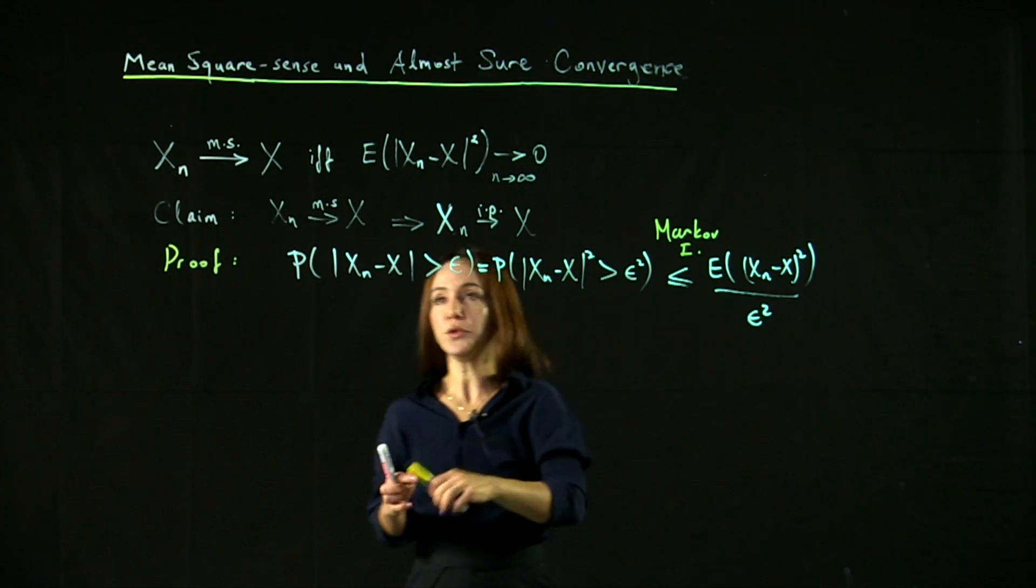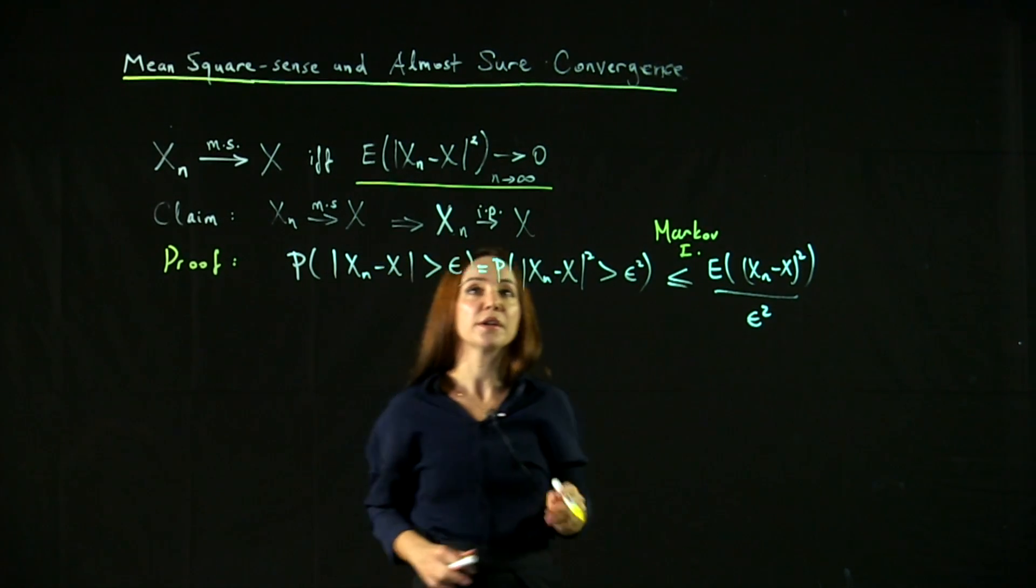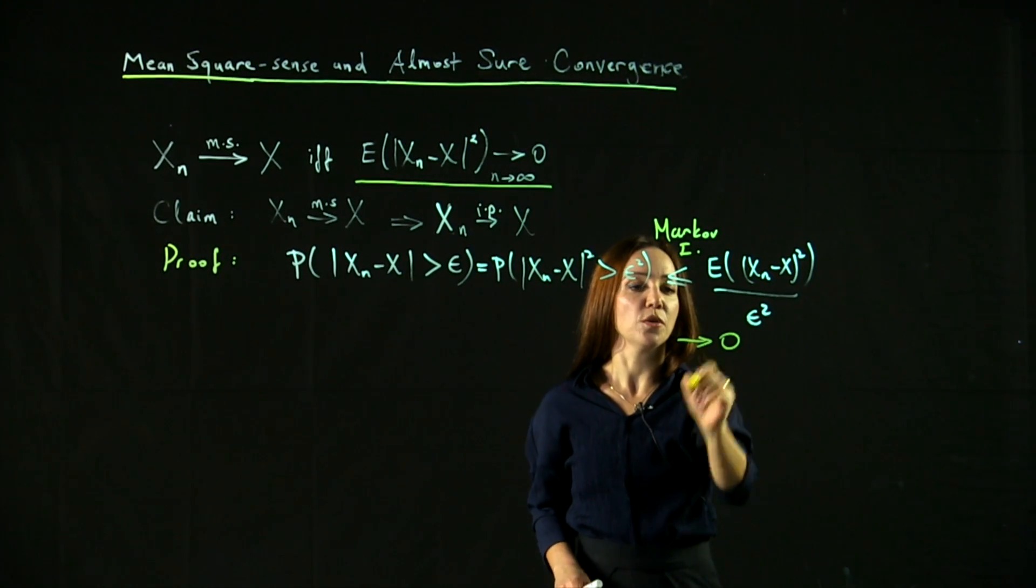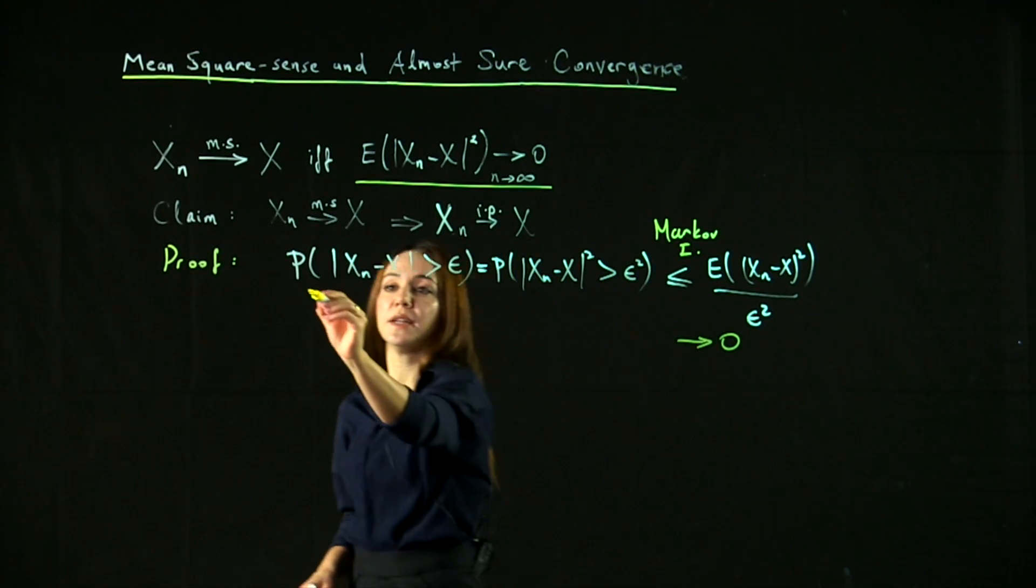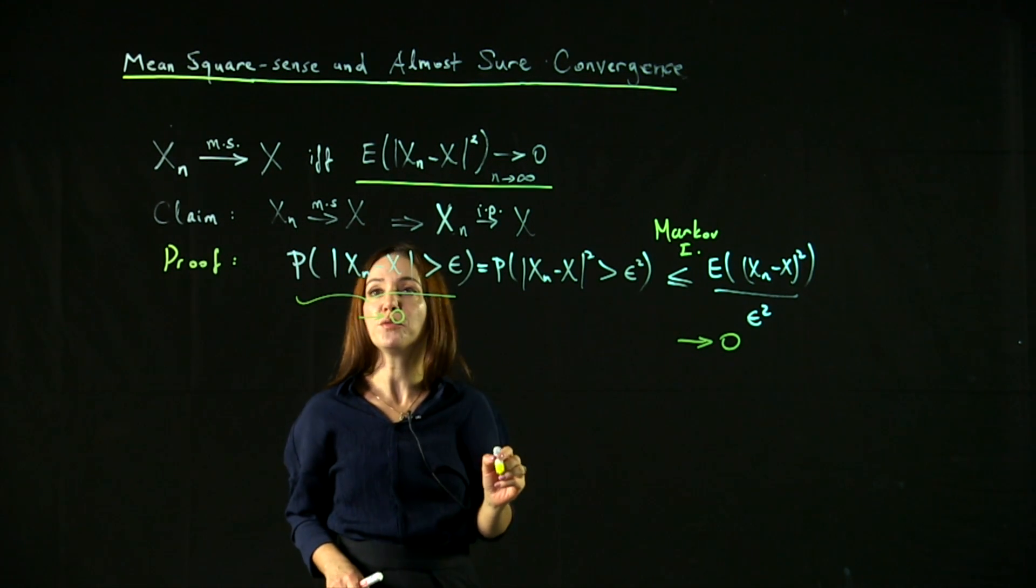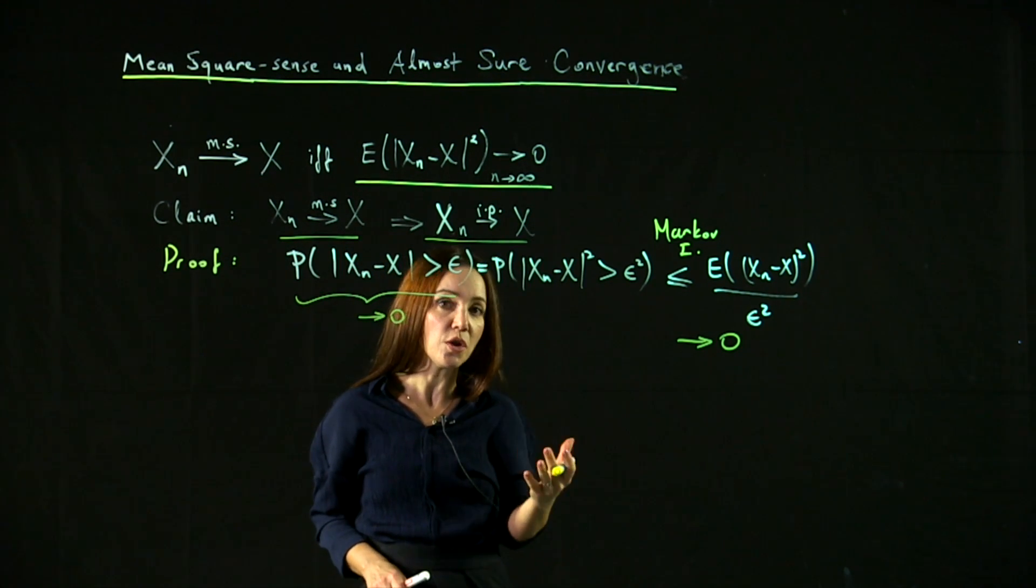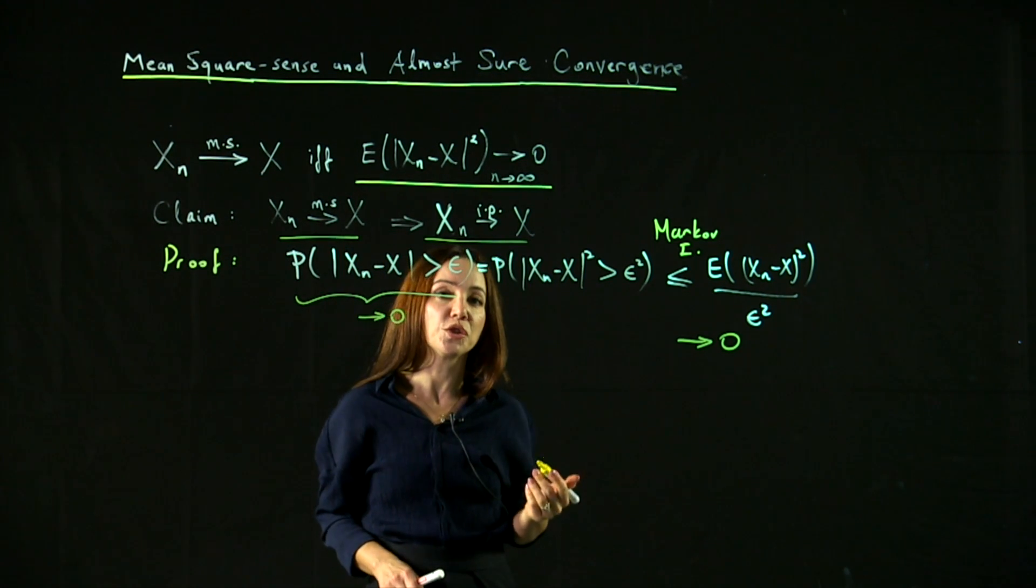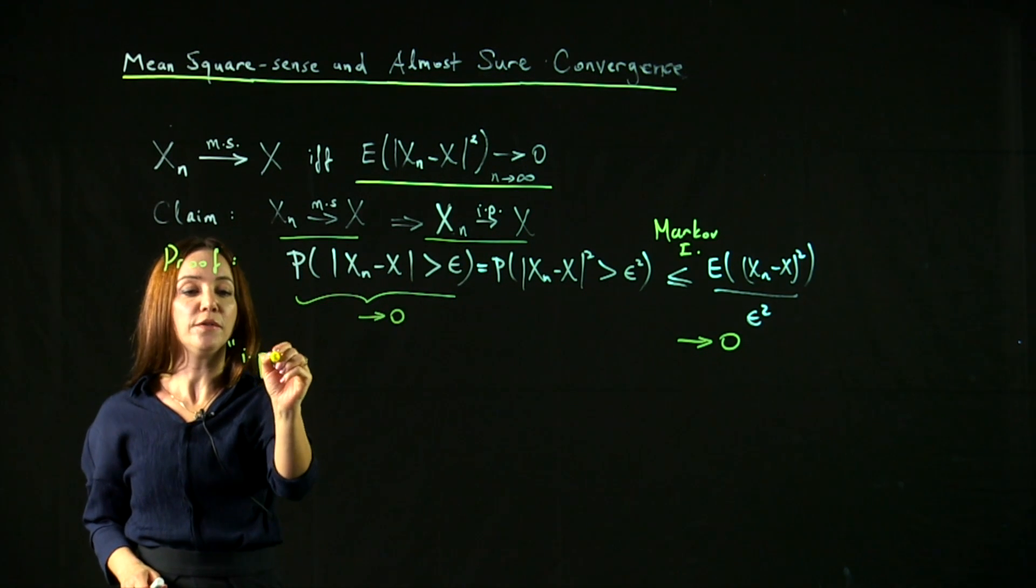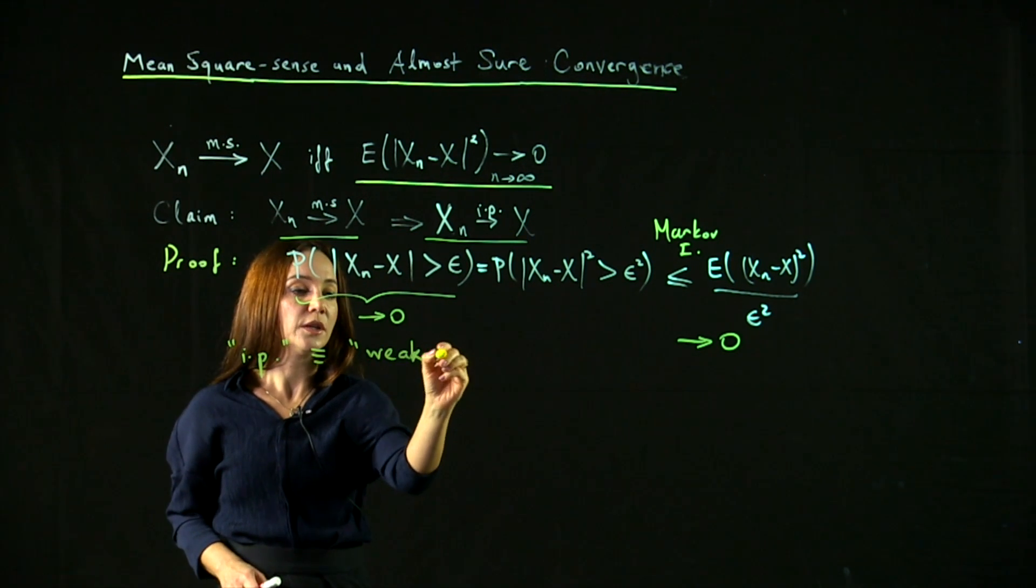But since we assumed that there is mean square error convergence to x already, this thing goes to zero, which implies that the left-hand side goes to zero as well as n goes to infinity. So we have proved that mean square error convergence implies in probability convergence, which shows that mean square error convergence is a stronger notion of convergence. And in fact, in probability convergence is known as weak convergence.